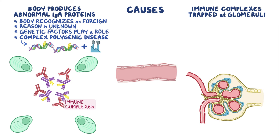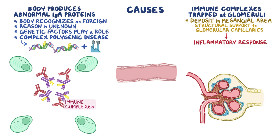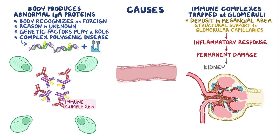IgA protein immune complexes deposit primarily in the central area of the glomerulus, known as the mesangial area, which is the tissue that offers structural support to the glomerular capillaries. Once these immune complexes start depositing, they trigger inflammatory reactions at the site, which ultimately lead to permanent glomerular damage, which may eventually lead to kidney failure.